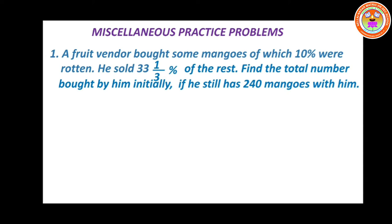10 percentage were rotten, which you cannot eat. He sold 33 and 1/3 percentage of the rest. Find the total number of mangoes he bought initially — initially means starting. So how much mangoes at the start did he buy? That is the question you are going to find. But still he is having 240 mangoes with him.